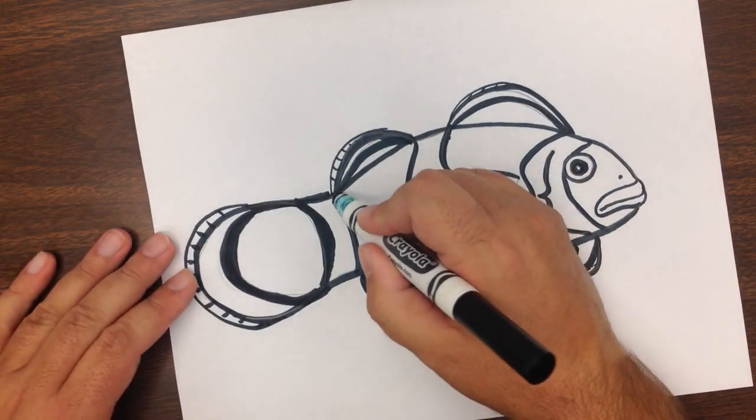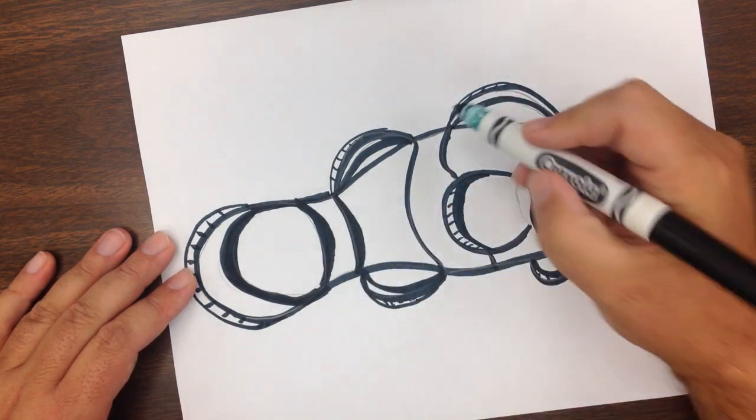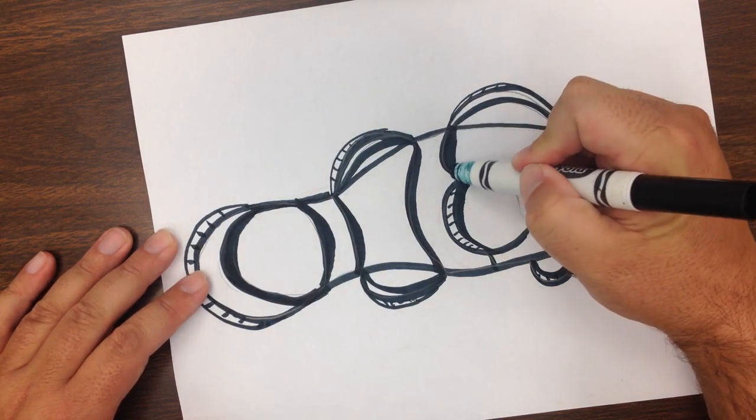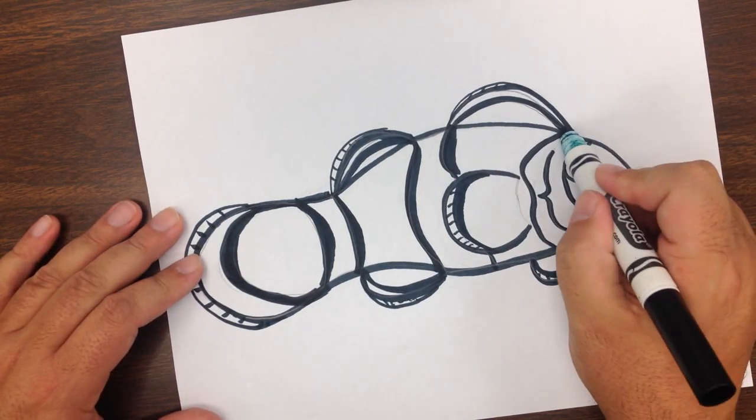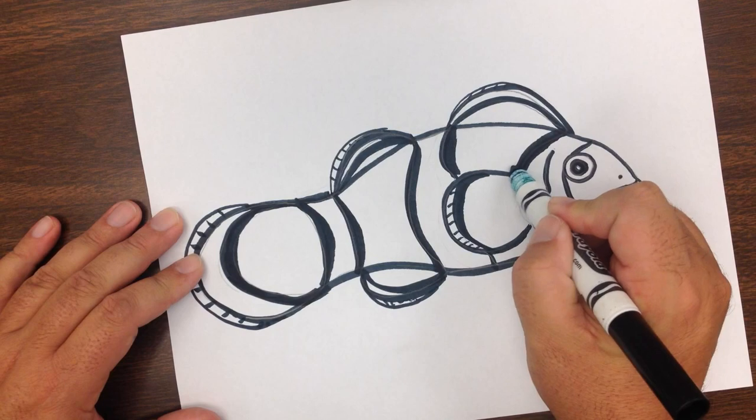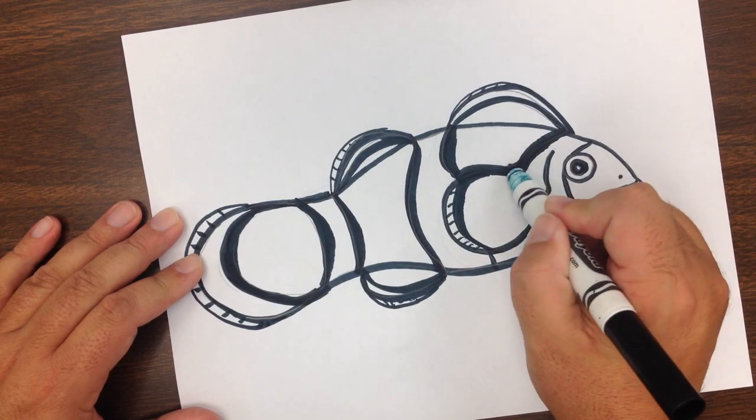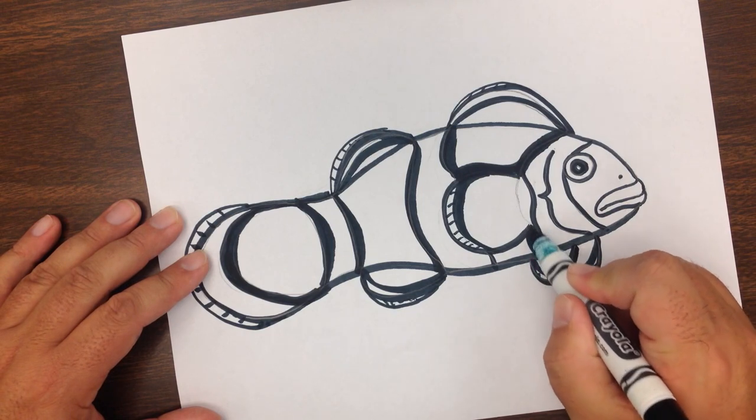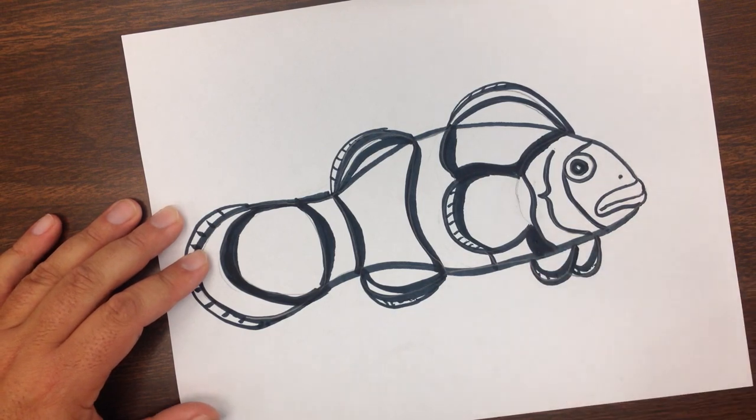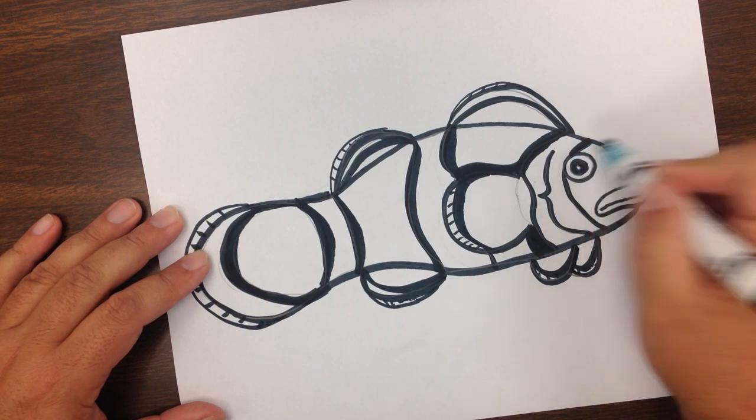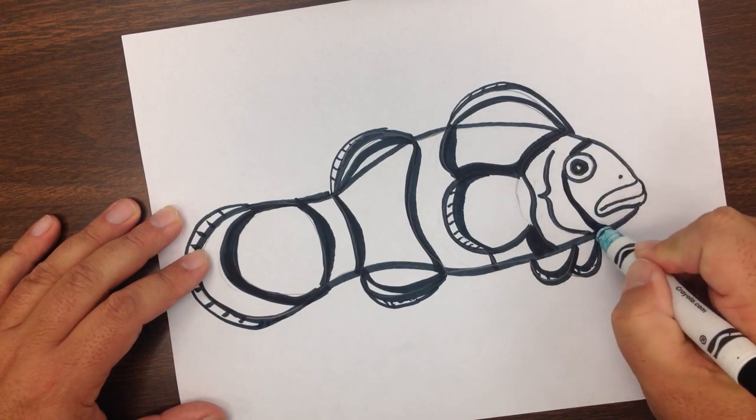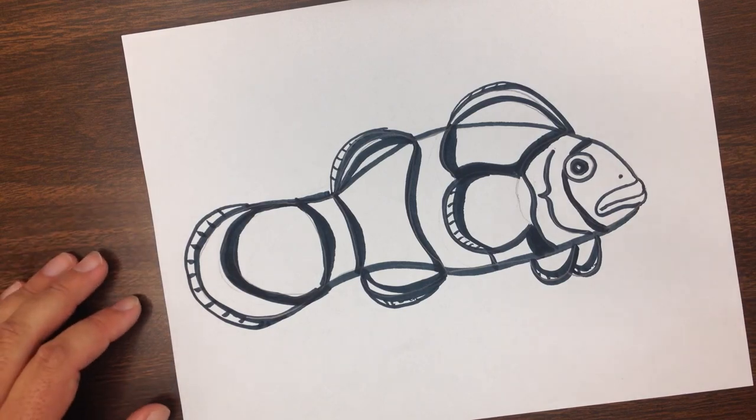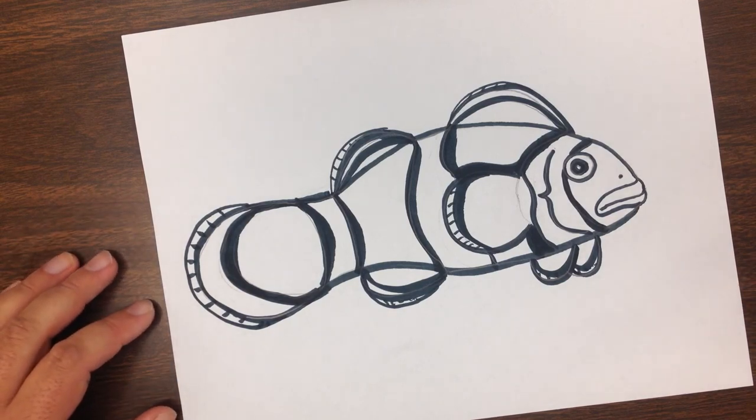Back here, and for this one also, I'm going to continue that black line just above this fin. Down here underneath, and then right there where the face is. So this basically finishes the pattern, the black and white pattern of the clownfish.